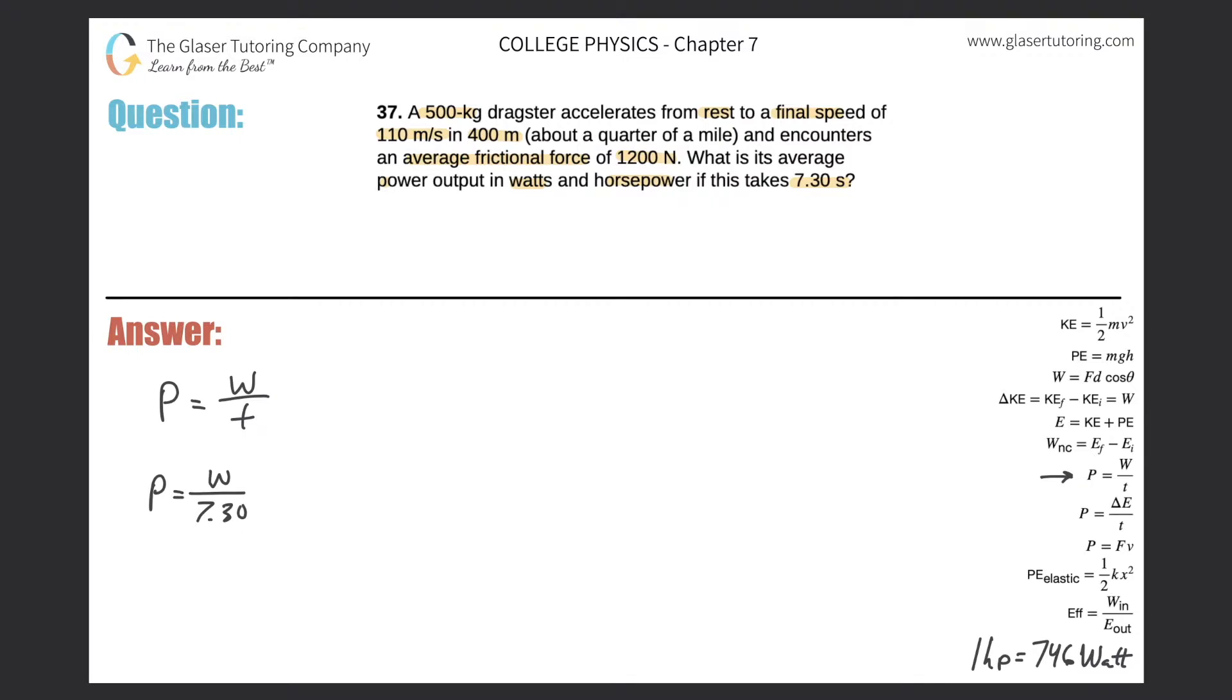The dragster has this mass and it goes from rest to a final speed of 110 meters per second. Now I know if I'm trying to calculate work, work is in terms of joules, and work is basically just a type of applied energy. So therefore, what's the energy value when this dragster is in motion? Well, the energy concept is kinetic energy. That's the energy of motion.